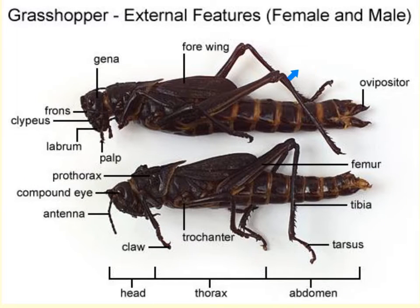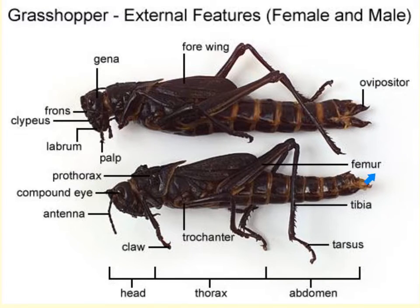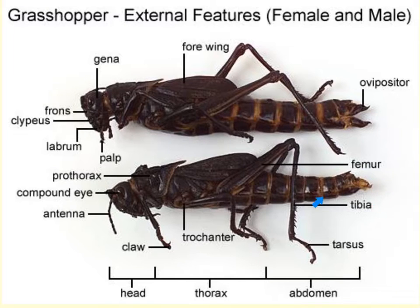Continuing along the abdomen region, we can differentiate males from females by looking at the last section of the abdomen. The terminal segment on males is blunt, but in females you'll notice two pairs of curved movable projections called ovipositors, which are used for digging in the ground as eggs are being deposited. So males have a blunt end, while in females it will be V-shaped.